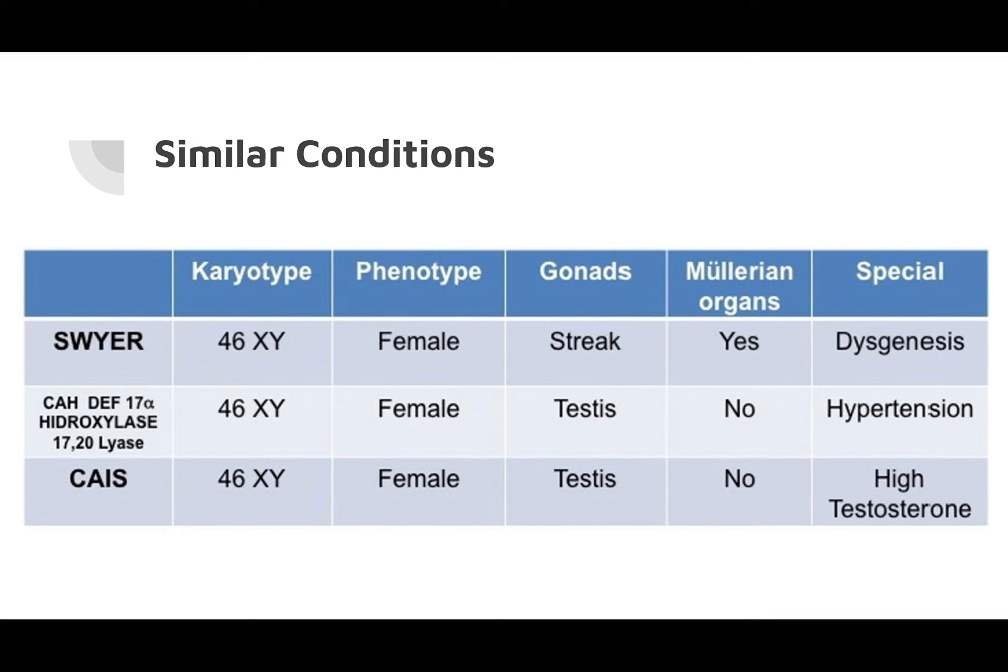Similar conditions also include CAH and CAIS. What is interesting is that all of them have female phenotypes, but only Swire syndrome in those examples has streaked gonads. The other conditions have male gonads or testes. That's why Swire syndrome-affected people have Müllerian or female organs, whereas the other similar conditions do not. But in the end, they share the same phenotype and, to some extent, the same genetic observations evident for those disorders.